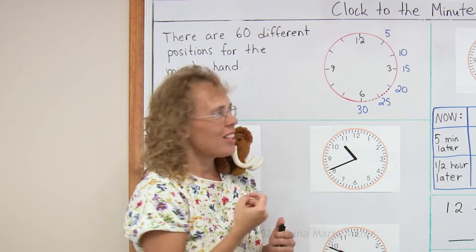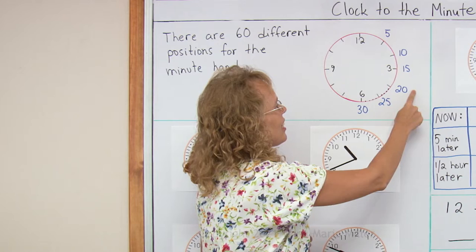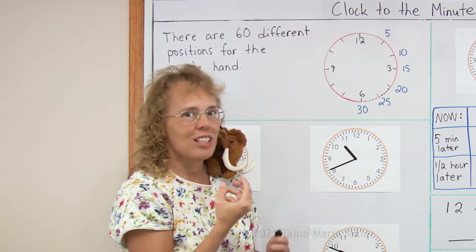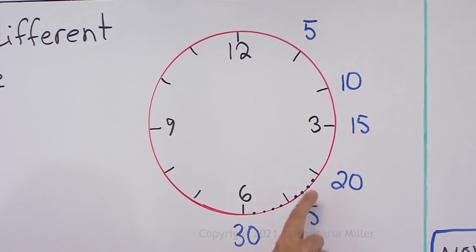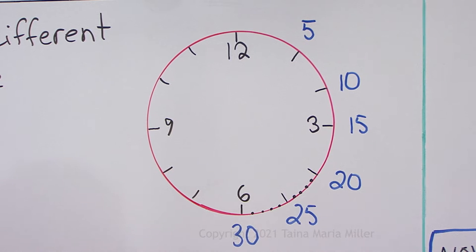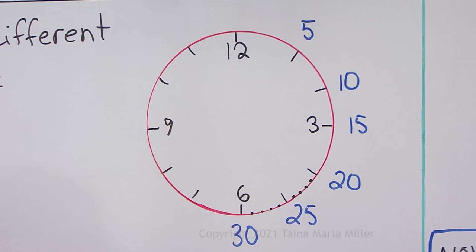But of course, there are numbers between 15 and 20, 20 and 25, there are actually numbers there. And so the minute hand can point to any of these here between 20 and 25 and so on. So the minute hand could point to this here and it would be 21 minutes. The minute hand could point to this here and it would be 26 minutes and so on.